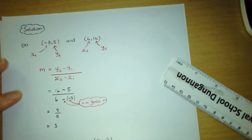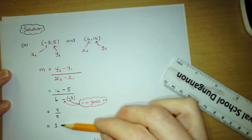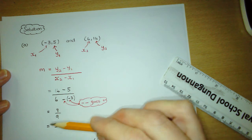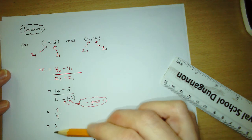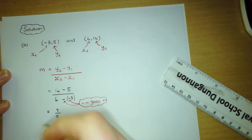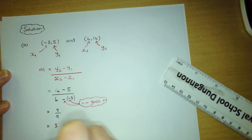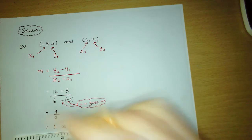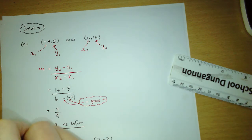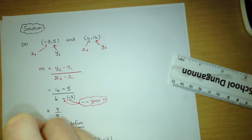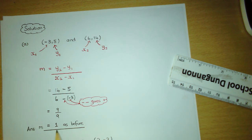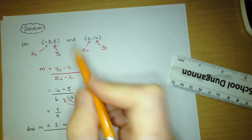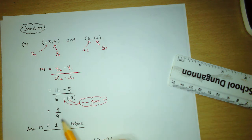That was the same answer we got when we used the sketch method — flick back through your notes and check that we got 1 for the sketch method, and we did. So we got 1 as before. The gradient is positive, so even though we didn't sketch this line, it's sloping upwards. The value of the gradient is 1, so it's not really steep, but it is sloping upwards.